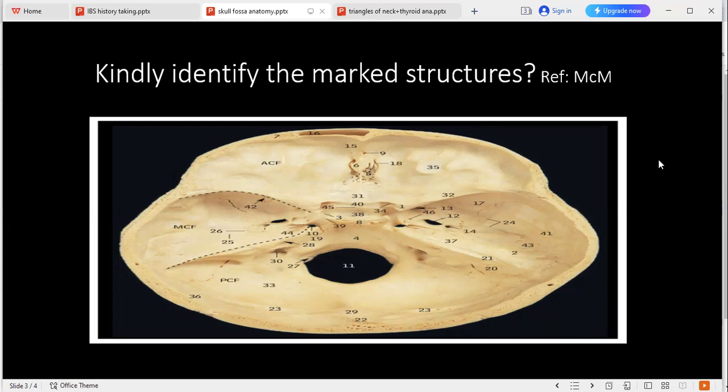Can you tell me the boundaries of the posterior cranial fossa please? Anteriorly is the clivus and petrous part of the temporal bone, posteriorly is the occipital bone, inferiorly is foramen magnum, laterally is the squamous part of the temporal bone, and superiorly is the tentorium cerebellum.